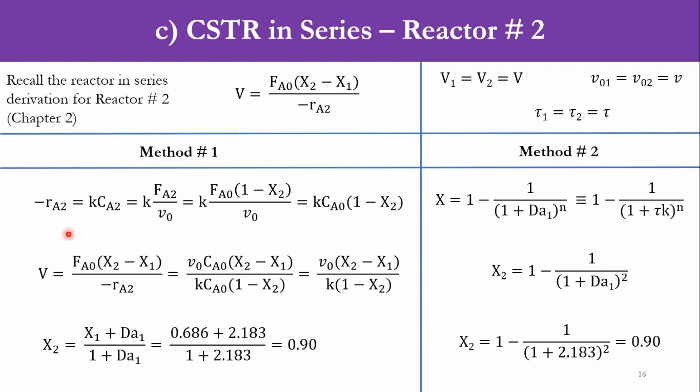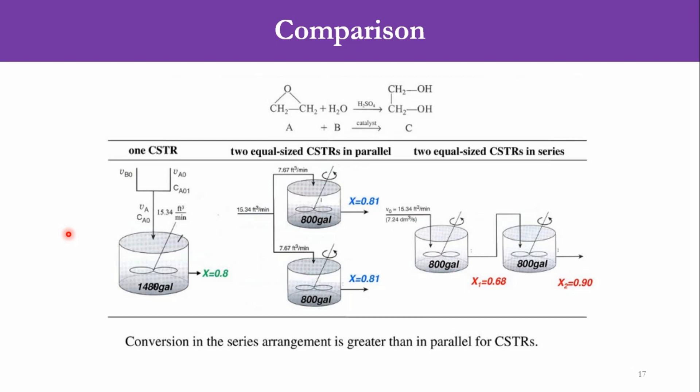Now we come to the comparison of these 3 reactor systems. In the first, we had been given a single CSTR. We had known the value of conversion which was 0.8 and now the volume is 1480. The book states 1480 but once I had calculated it was about 1466 gallons. For the second case, once the reactors were in parallel and the volume was 800 gallons, the conversion was 81%. While for the third case, where the reactors are in series, first reactor gave the conversion of 68% while the second reactor gave the conversion of 90%.